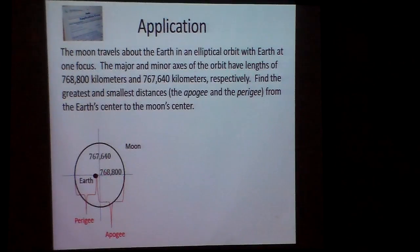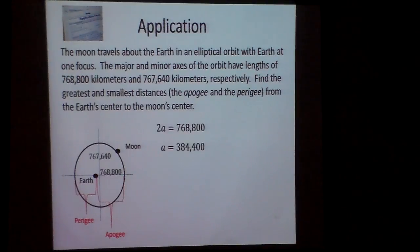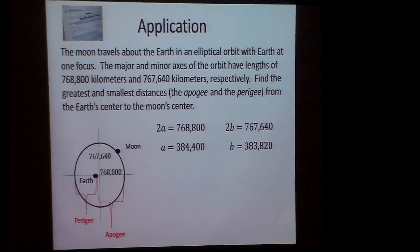So first off, there's earth, there's the moon. And we can do this here. If 2A is the horizontal axis, dividing by 2 tells me A is 384,400. So if my vertical axis is that, I divide that by 2, it tells me my B is that.